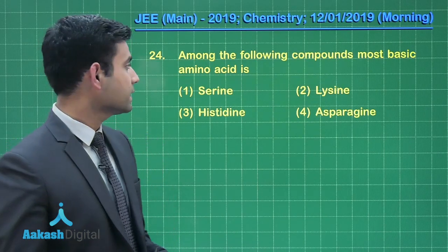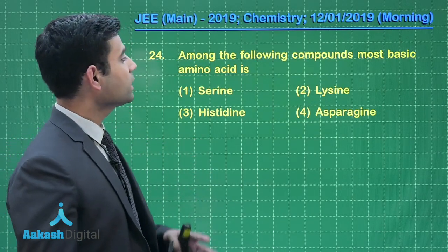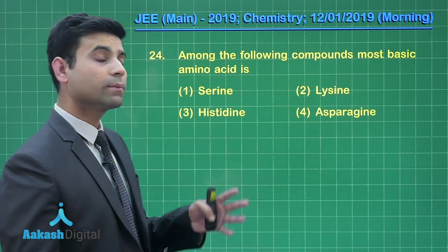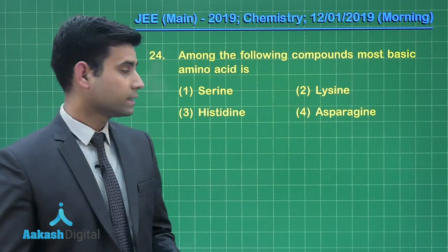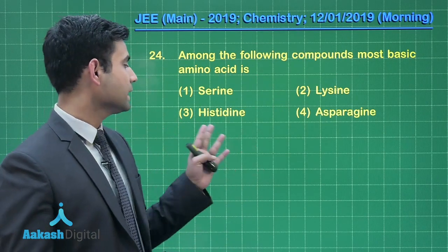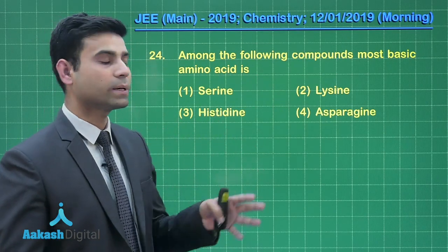This is the next question. It says: among the following compounds, the most basic amino acid is — the options are serine, lysine, histidine, asparagine.